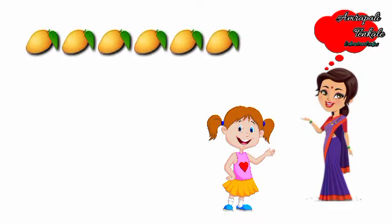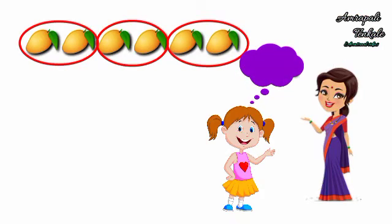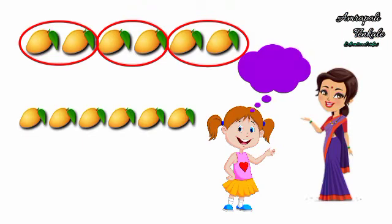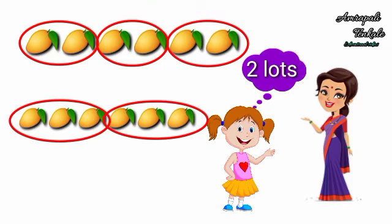Let's learn forming groups or making shares or lots. Mother said I have brought 6 mangoes. Sucheta, make lots of 2 mangoes to a lot. How many lots do you get? Sucheta said 3 lots. Now shall I make lots of 3 mangoes each? Mother said sure, do it and see how many lots there are. Sucheta said there are only 2 lots this time.